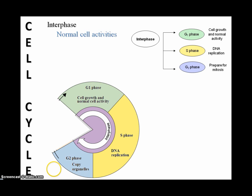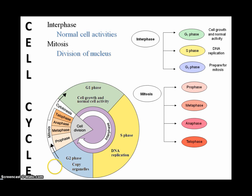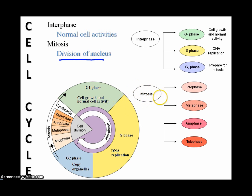Once interphase is complete, a new stage referred to as mitosis takes place. Mitosis has four key stages of its own. Mitosis is the point where the cell divides the nucleus — it's important to remember that mitosis divides the nucleus. The stages of mitosis — prophase, followed by metaphase, anaphase, and telophase — will be covered in much more detail in the next segment of this tutorial.